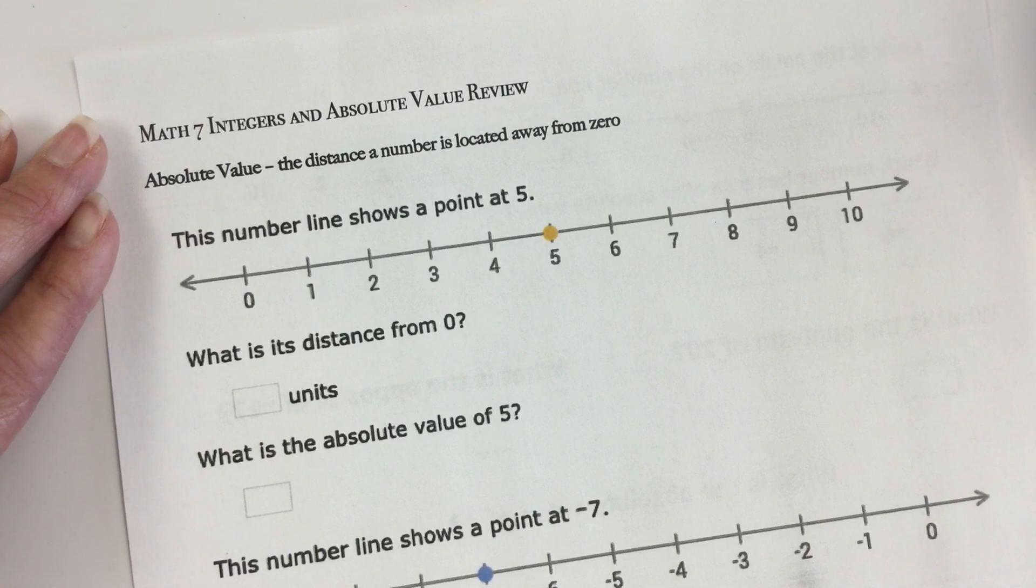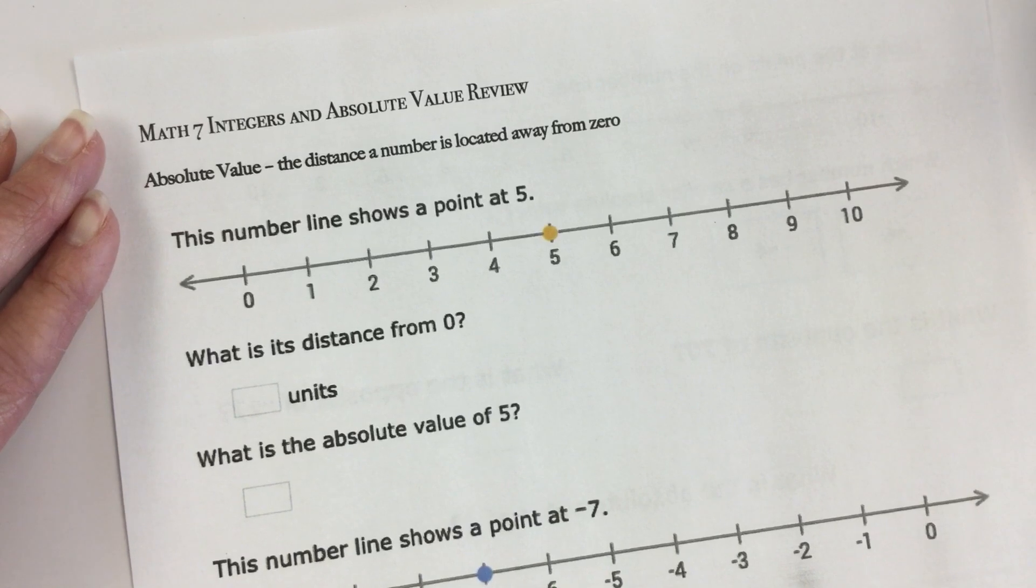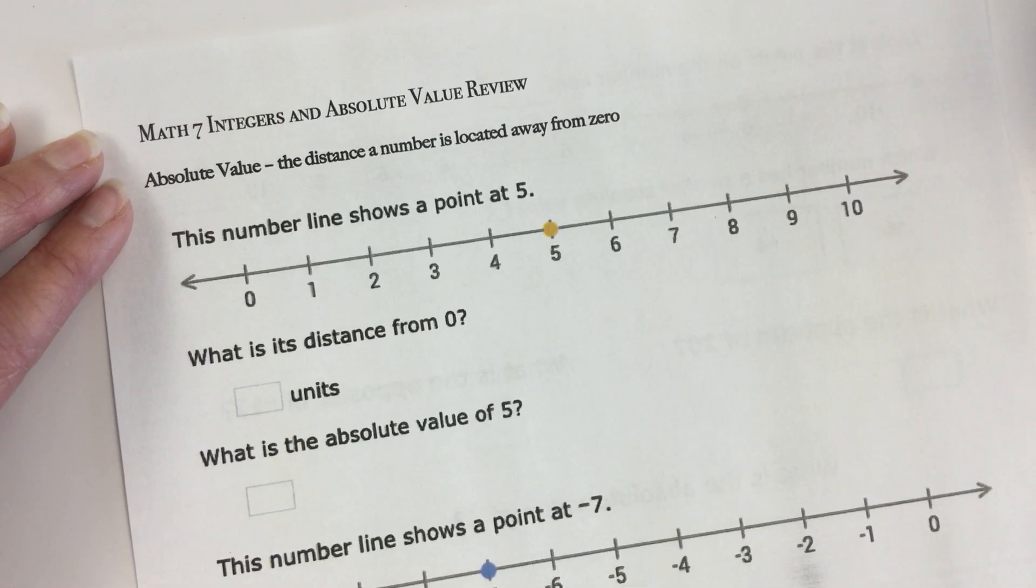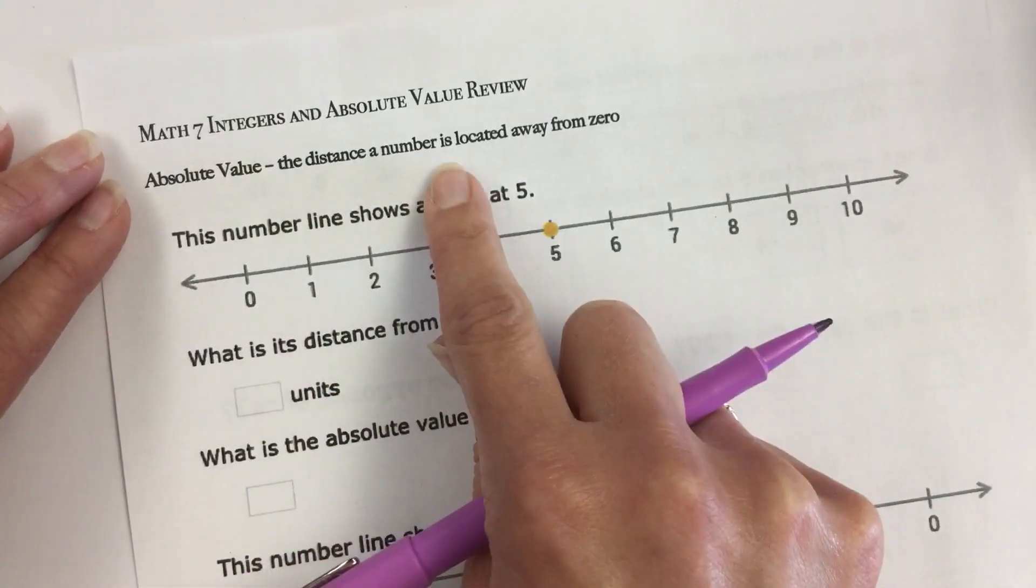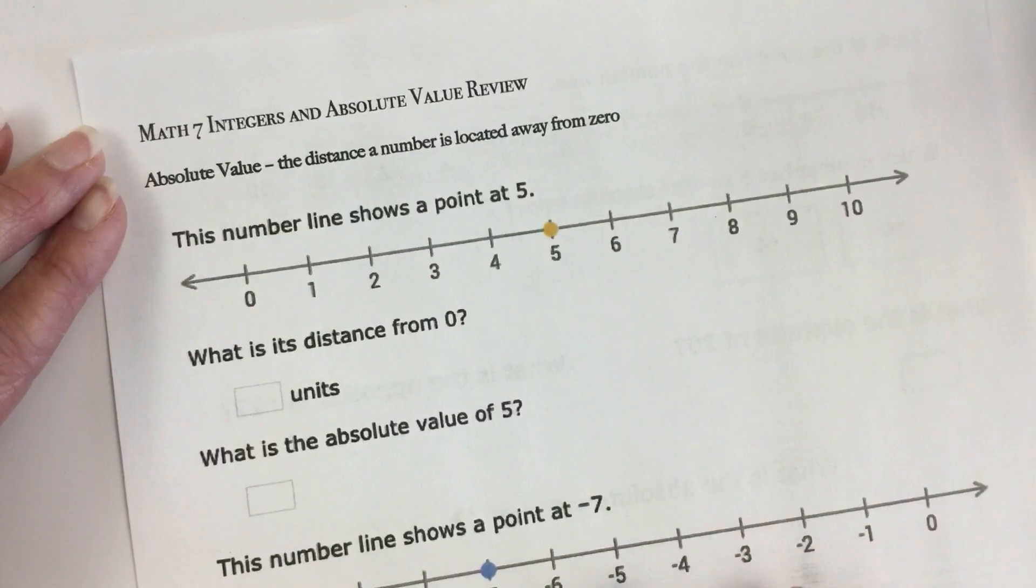Some of them will just ask you to place numbers on a number line. You've got positive, negative. Some of them will ask you about the absolute value. Remember that the absolute value is the distance a number is located away from zero. So this example is one that I pulled off of your IXL.